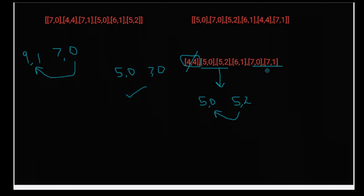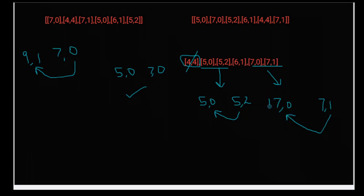Now looking at [7, 0] and [7, 1]: [7, 1] says exactly one element with height greater than or equal to seven should be in front of it. So these two sevens should follow each other, with one being directly ahead of the other since [7, 0] has no one in front, and [7, 1] has exactly one.